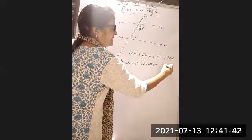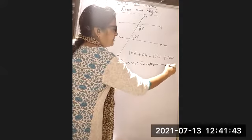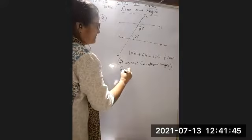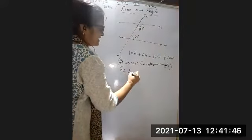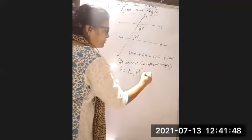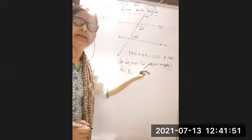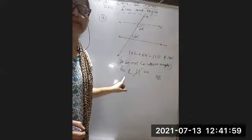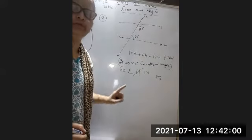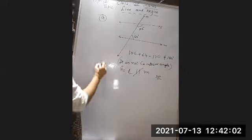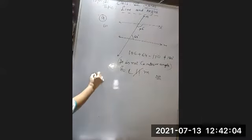So this is a co-interior angle check. Since 106 + 64 ≠ 180, L is not parallel to M. I have crossed out the parallel sign — these lines are not parallel.